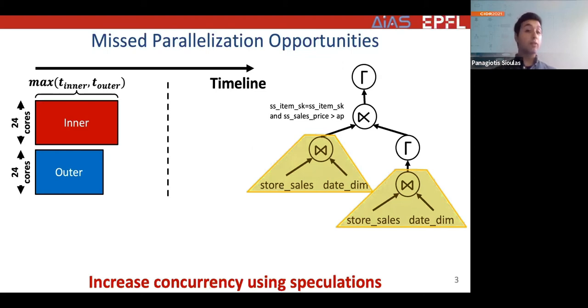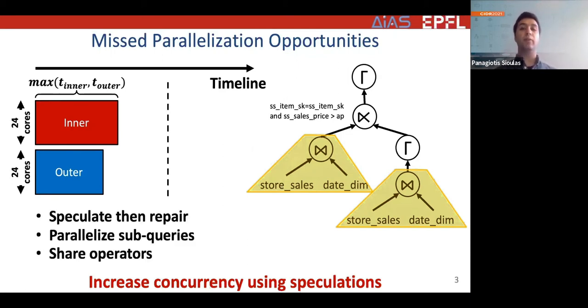In this work, we make such task parallel schedules possible. Specifically, we propose a novel execution paradigm based on speculation that predicts the results of the inner part and then uses those predictions in order to execute the inner and the outer part in parallel. Of course, predictions can be inaccurate, and therefore we use a repair mechanism to guarantee correctness at the end of execution.